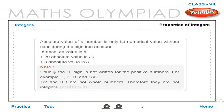Absolute value of a number is only its numerical value without considering the sign. |−5| = 5, |+20| = 20, |+3| = 3.